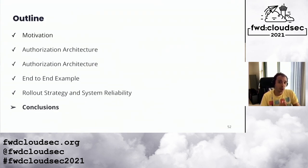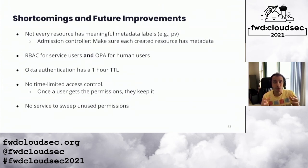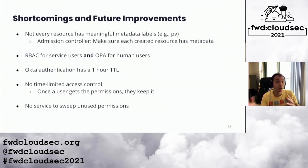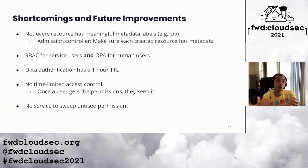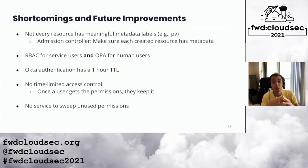To conclude, let's talk about our shortcomings — after all, nobody is perfect. First, not every resource has meaningful metadata in our infrastructure, so we cannot make team-based access decisions on every resource, although these cases are rare. In the future, we want to give ownership-based access to all resources and plan to use an admission controller to enforce that all resources have meaningful metadata.